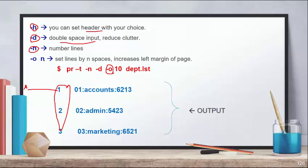With minus O and the value 10, after 10 spaces of left margin, the output will be displayed. Combined with PR minus T (no header/footer) and minus N, each row will show a number in front of it — one, two, three, four, five, six, and so on. With minus D, after each value, two lines of space will appear — double spacing is applied.